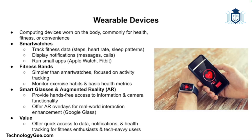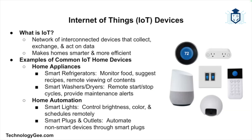Next, let's look at wearable devices. Wearables are computing devices designed to be worn on the body, often for health, fitness, or convenience. Smartwatches like the Apple Watch and Fitbit track fitness data, display notifications, and can run small applications — monitoring steps, heart rate, and sleep patterns. Fitness bands are simpler, focusing on activity tracking and health metrics. Smart glasses and augmented reality wearables like Google Glass provide hands-free access to information, camera functionality, and augmented reality overlays for enhanced real-world interactions.